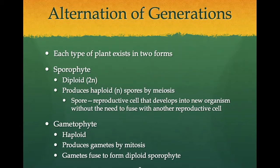The sporophyte is the structure that produces spores by meiosis. A spore is a haploid reproductive cell that develops into a new organism without needing to fuse with another reproductive cell. In the plant life cycle, a spore undergoes mitosis and becomes a gametophyte. The gametophyte is named because of its role in the production of gametes. In plants, eggs and sperm are produced by mitotic cell division. A sperm and egg fuse forming a diploid zygote that undergoes mitosis and becomes the sporophyte. In plants, meiosis produces haploid spores, and mitosis is involved in the production of gametes during the gametophyte generation.